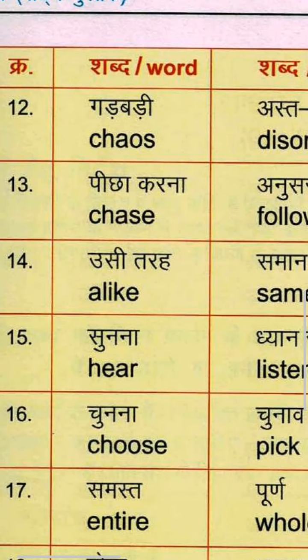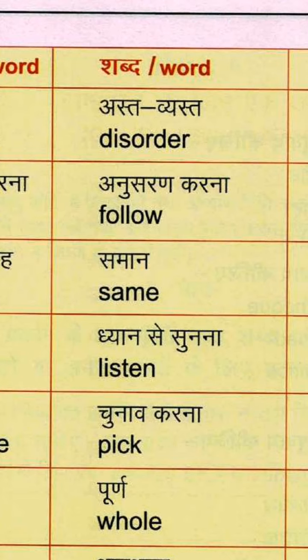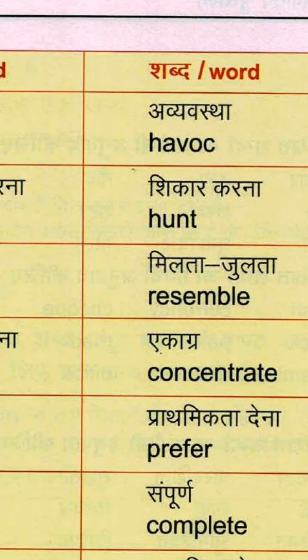Twelfth group: Gharbad, which is Chaos — C-H-A-O-S, meaning Gad-badhi. Astvyasta means Disorder — D-I-S-O-R-D-E-R. And Havoc — H-A-V-O-C, also meaning great disorder.